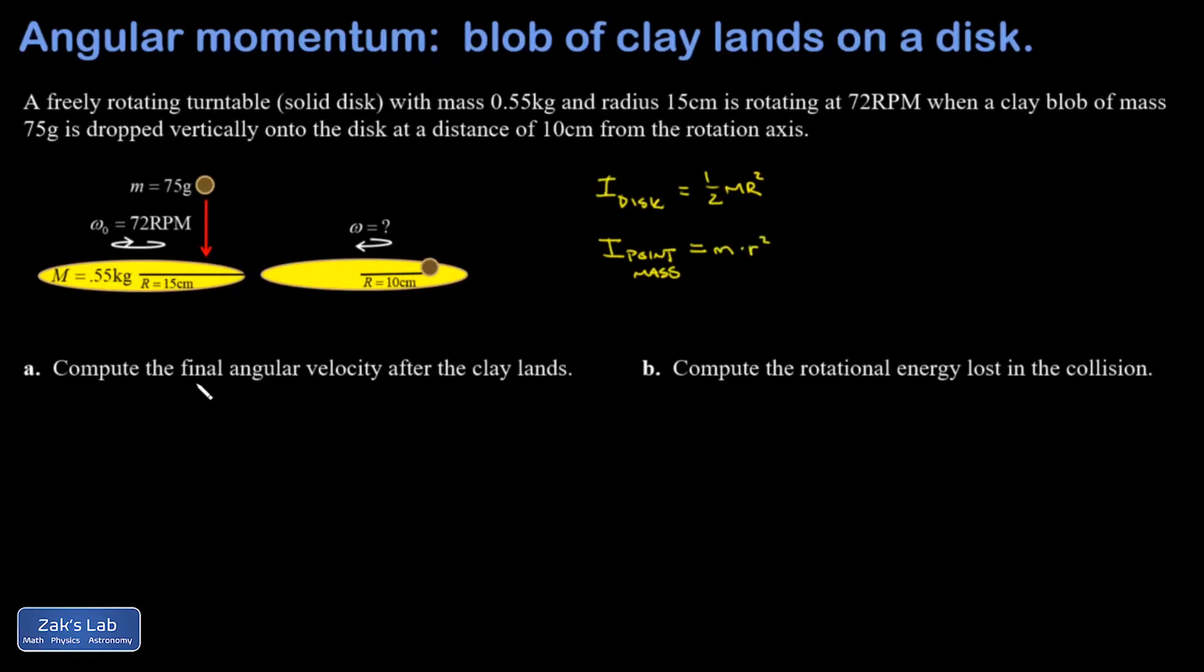So because there's no net torque exerted on the system from the outside, I know that angular momentum is conserved. So L initial equals L final. And in the initial state, the clay blob doesn't carry any angular momentum at all. It has no rotation around that vertical axis. It's just falling straight down.